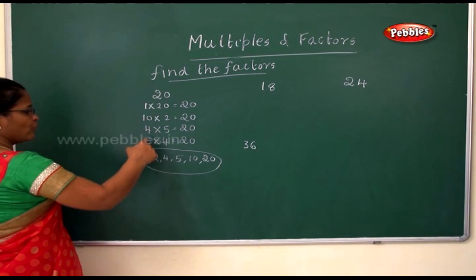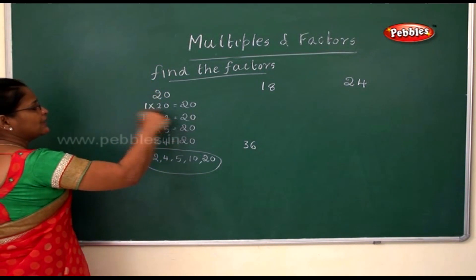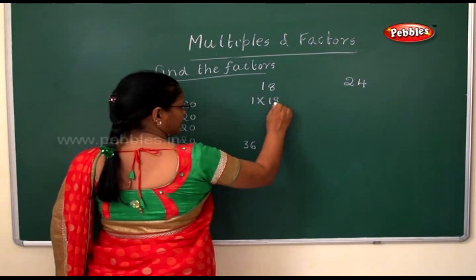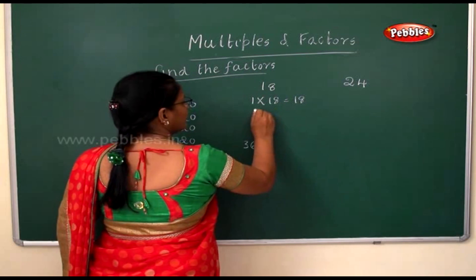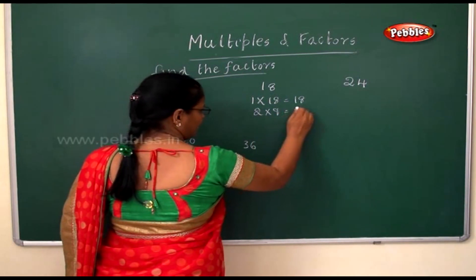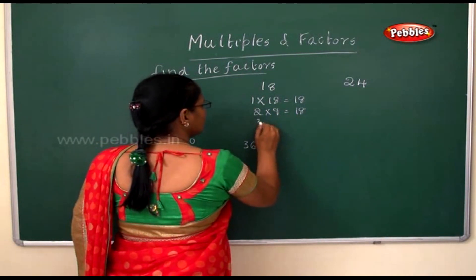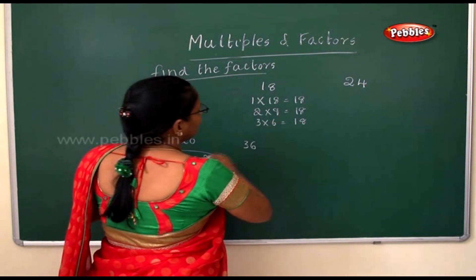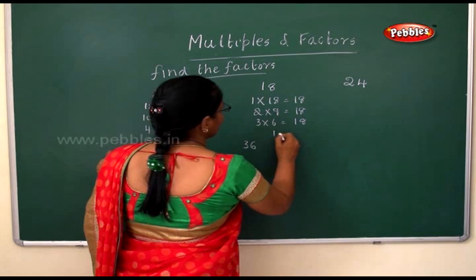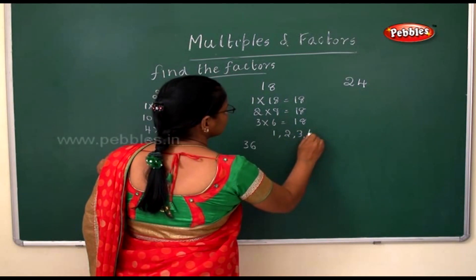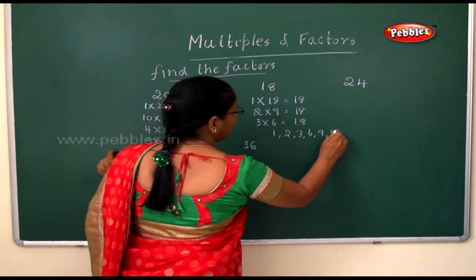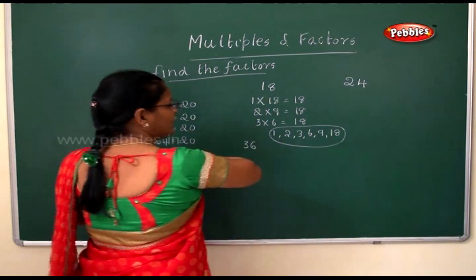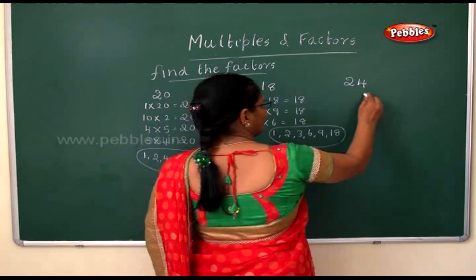For eighteen: one eighteen is eighteen, two nines are eighteen, three sixes are eighteen. So the factors for eighteen are one, two, three, six, nine, and eighteen.